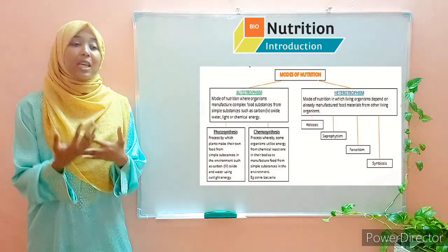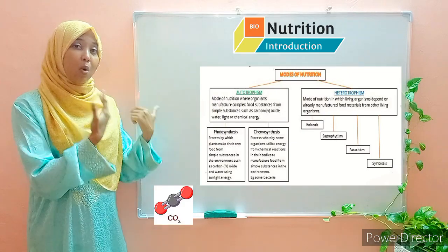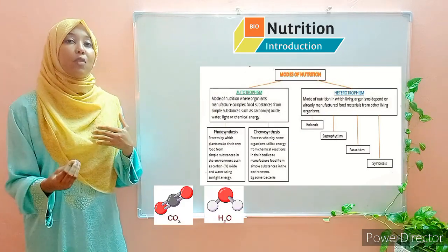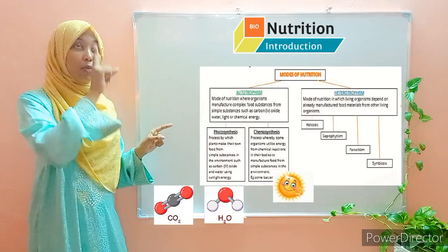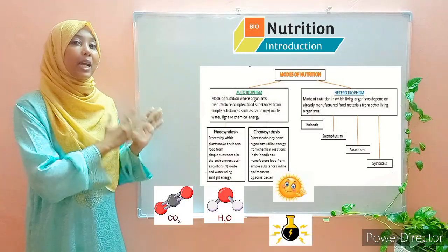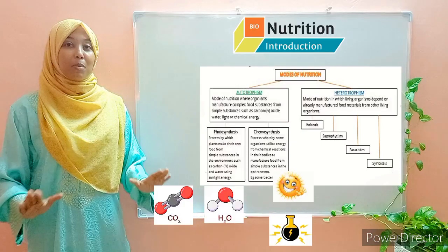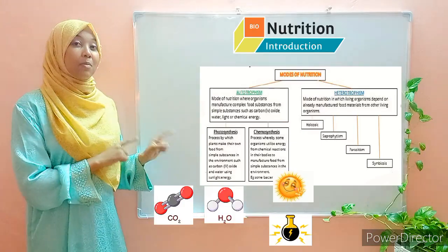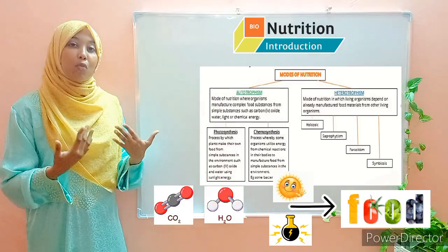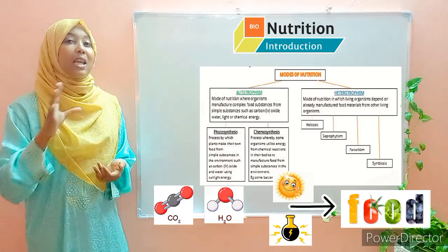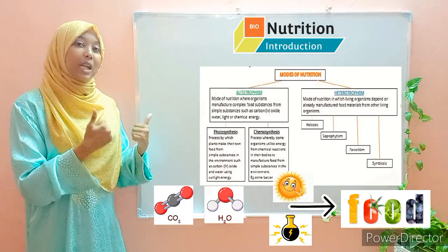How do they do this? They use simple molecules like carbon dioxide and water, and a source of energy. This source of energy can either be light from the sun or it can be energy from chemical reactions. So in summary, autotrophism is whereby organisms manufacture their own food using simple molecules like carbon dioxide and water.